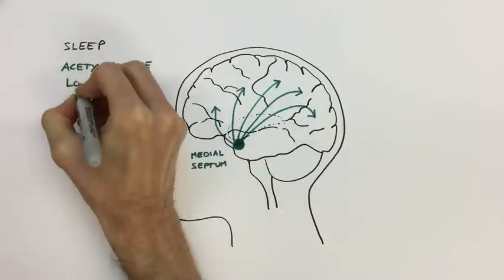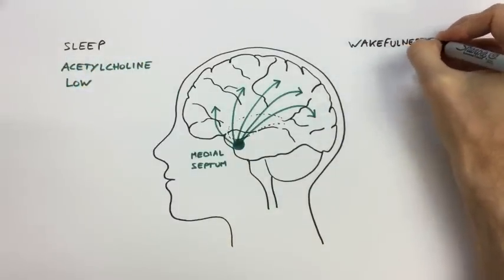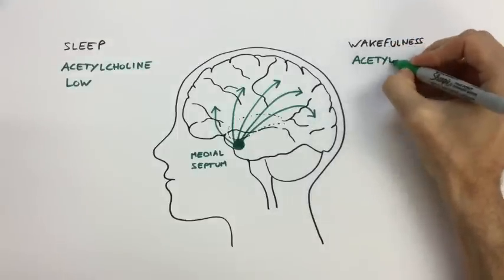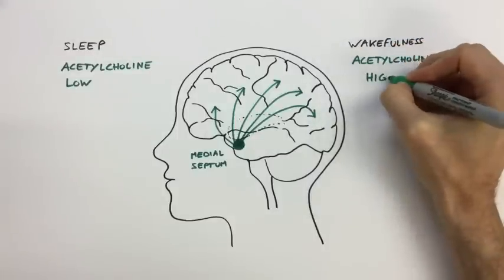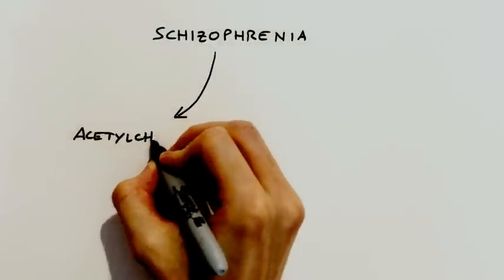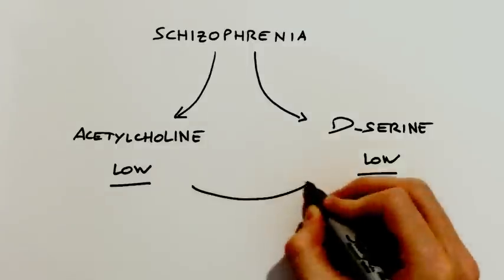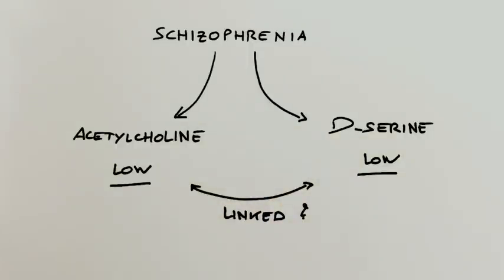Acetylcholine acts on receptors such as nicotinic receptors, and we think this is why 80% of schizophrenic patients are smokers, since nicotine from cigarettes and acetylcholine act on the same targets in the brain. Since both d-serine and acetylcholine are disrupted in schizophrenia, we wondered if astrocytes were capable of sensing acetylcholine levels and used that as a clue to know how much d-serine to release to neurons and when.